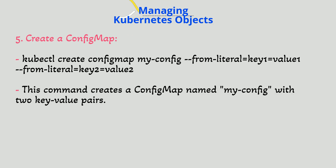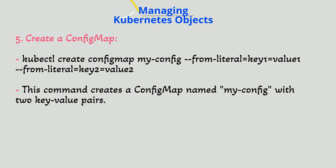5. Create a config map. `kubectl create configmap my-config --from-literal=key1=value1 --from-literal=key2=value2`. This command creates a config map named my-config with two key-value pairs.